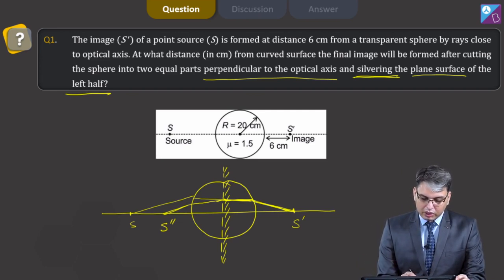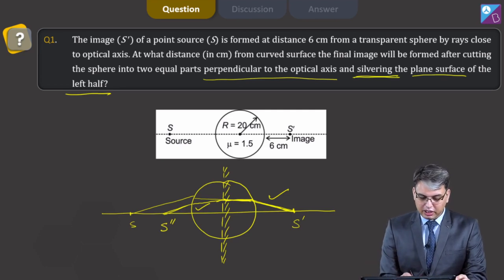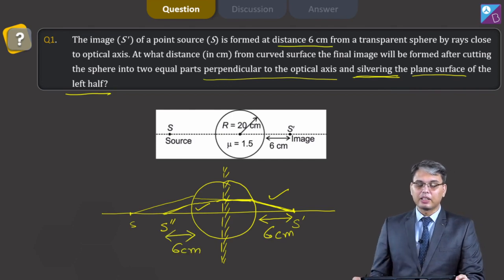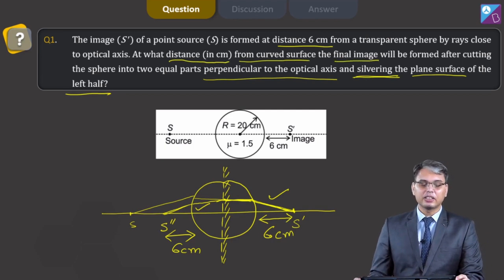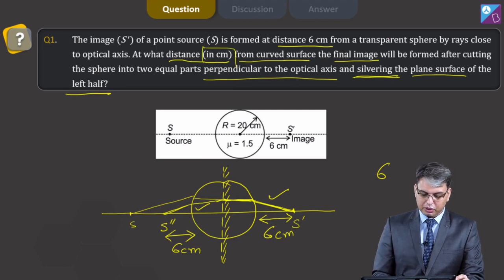The diagram on the right side of the mirror would be very similar to the diagram on the left side of the mirror. That means, as the distance of S' from the curved surface is 6 cm as per the question statement, the distance of S' will also be 6 cm. So the distance in cm from the curved surface of the final image will be 6 cm, and 6 would be the answer to this question.